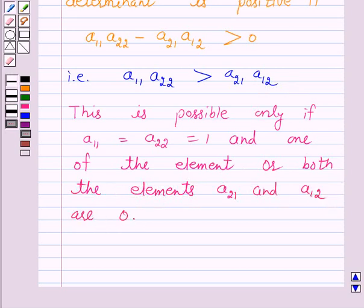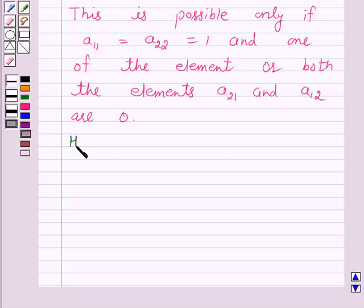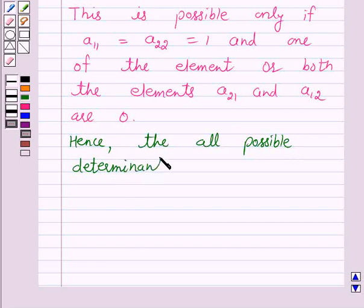Hence all possible determinants are: 1, 1, 0, 0. That is here a11 is equal to a22 is equal to 1 and both the elements a21 and a12 are 0.